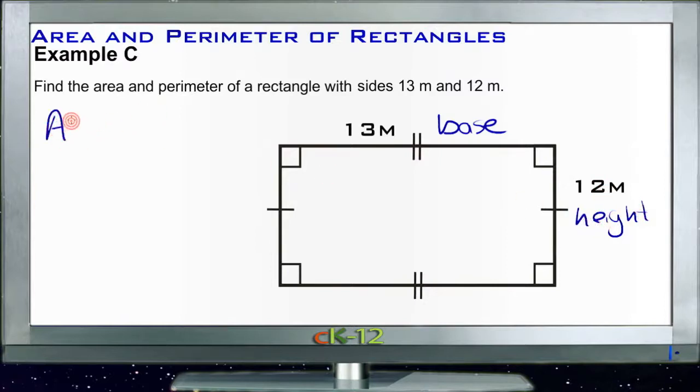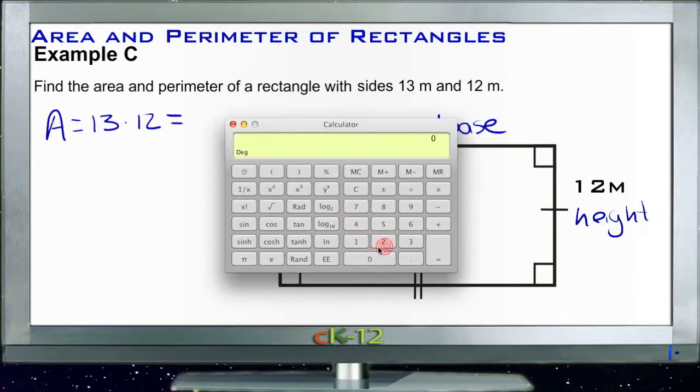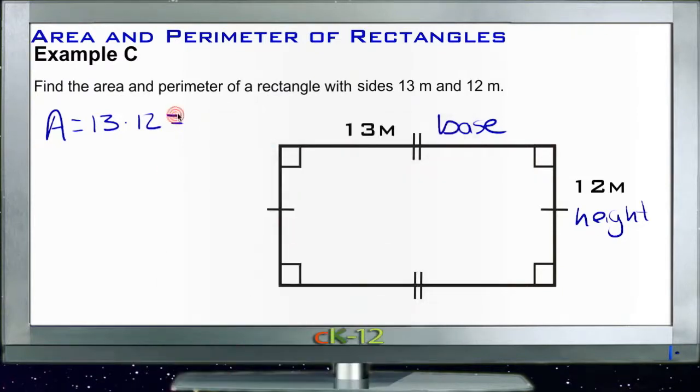So our area is going to be 13 times 12, and that's going to be, I should know 13 times 12, probably being a math teacher, but I'm not thinking of it right now, so that's what calculators are for. 156. 156, and these are meters, so our units would be meters squared.